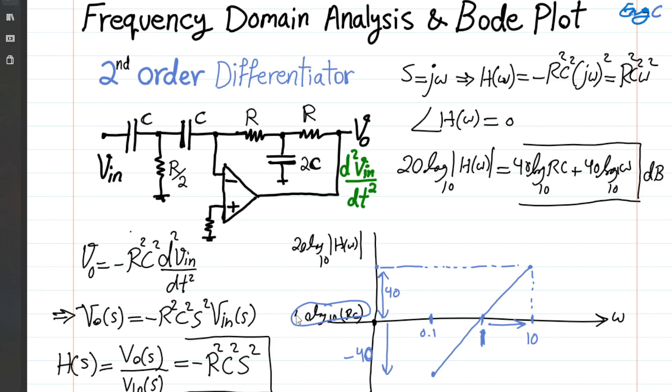So this is 40 log 10. Okay. So going back to my blue color here, and this is 40 log 10 going down from the 40 log 10 RC.